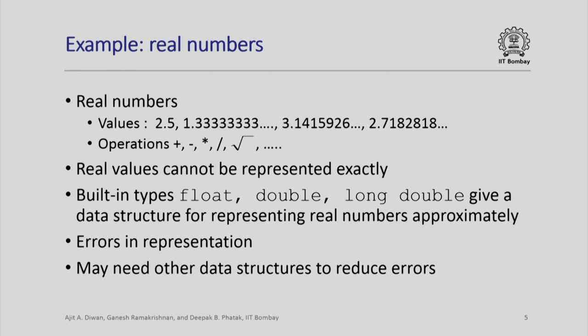Reals is an abstract type which has a set of possible values and associated operations. Float, double, and so on are implementations of that type which impose some restrictions on what values can be represented. When we work with real numbers we would rather not worry about those restrictions — we think of real numbers as abstract objects on which we perform operations. So reals is an abstract type and float/double are data structures which implement that abstract type with different restrictions.